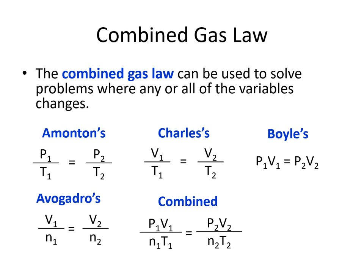The great thing about the combined gas law is that once you know it, you can solve for any of the other gas laws just by canceling out variables you don't need. For example, if we don't need moles or temperature — because they're held constant — we can cross them off, and we're left with P1V1 = P2V2, which is Boyle's law.